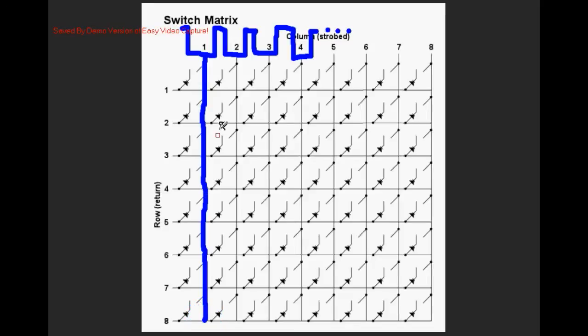So if we look at our switch here when it closes, column one row two will sense a low and the system knows that switch is closed. Then continues on and checks the rest of the columns and all of the rows for each column.